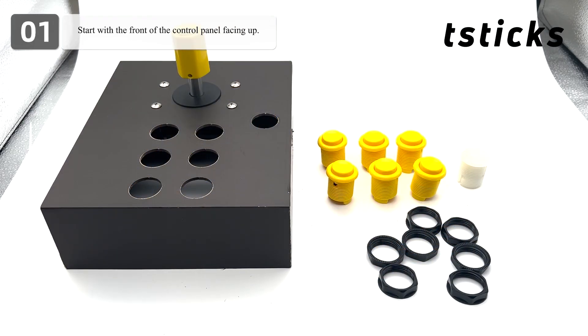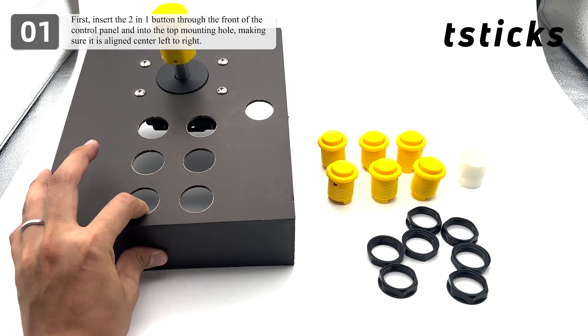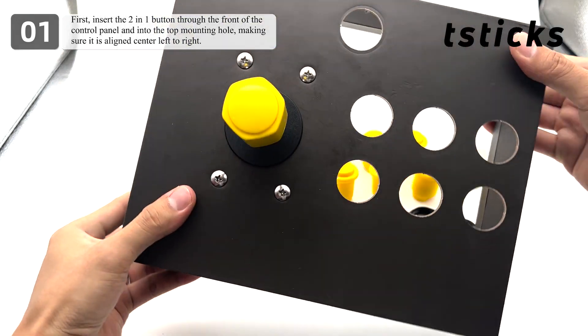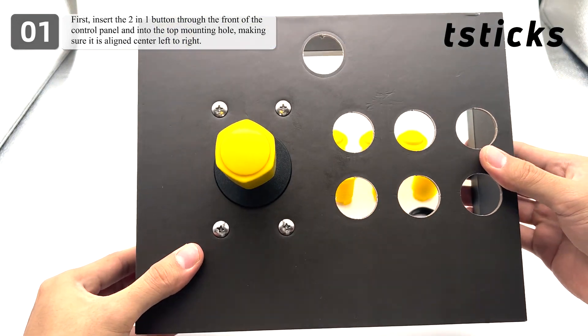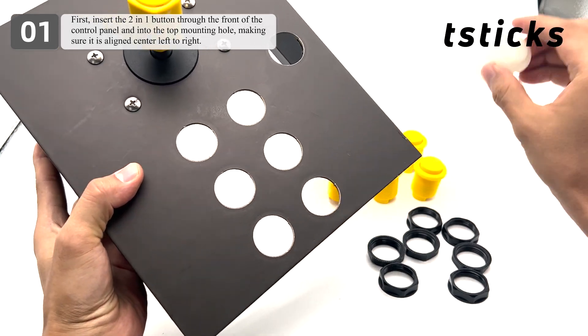Start with the front of the control panel facing up. First, insert the two-in-one button through the front of the control panel and into the top mounting hole, making sure it is aligned center left to right.